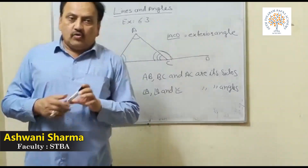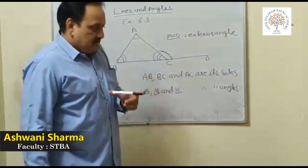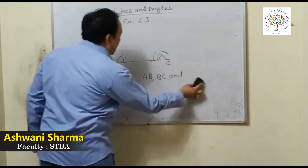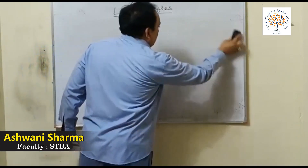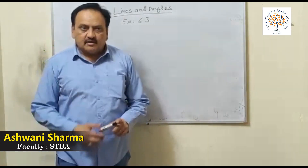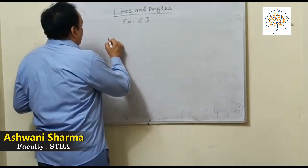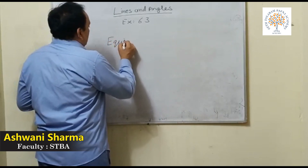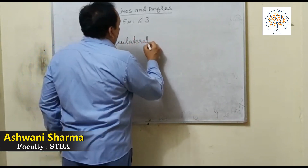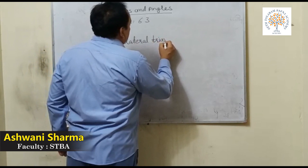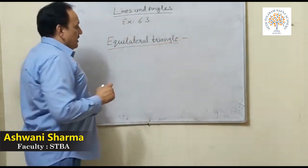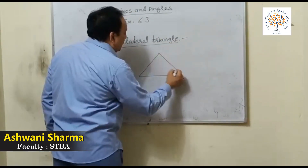Now, how many types of triangles are there? I will tell you. There are mainly three types. First, the equilateral triangle.